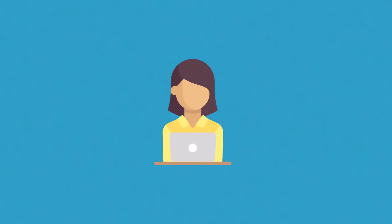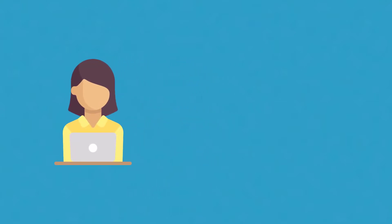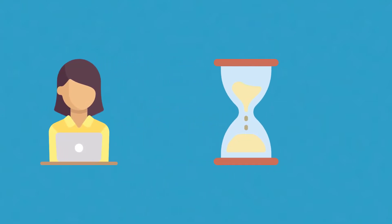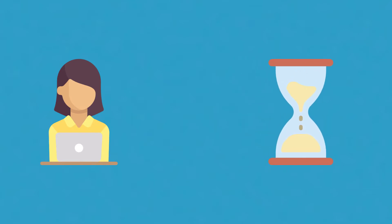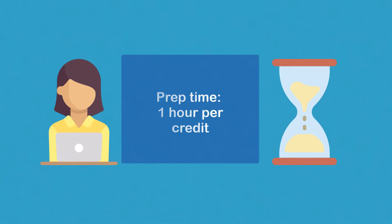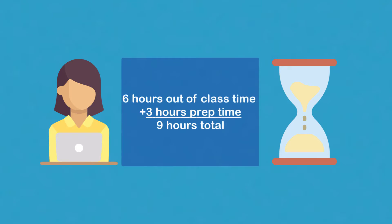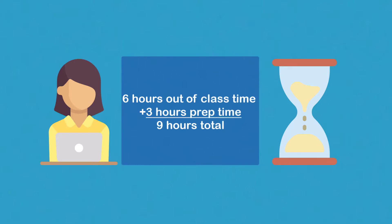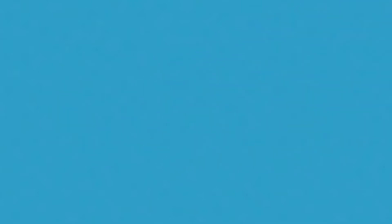If you're taking an online class, there is no in-class time, but there is prep time. Prep time is typically calculated as one hour per credit. A three-credit online class would have six hours of out-of-class time plus an additional three hours of prep time, for a total of nine hours a week.